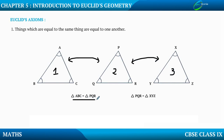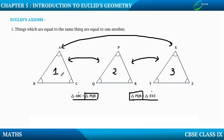In the first case, Triangle ABC is equal to Triangle PQR. In the second case, Triangle XYZ is also equal to Triangle PQR. So both Triangle ABC and Triangle XYZ are equal to Triangle PQR. Therefore, if 1 is equal to 2 and 3 is equal to 2, then 1 is equal to 3. So Triangle ABC is also equal to Triangle XYZ — things which are equal to the same thing are equal to one another.